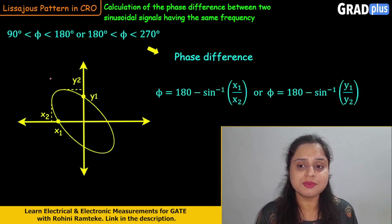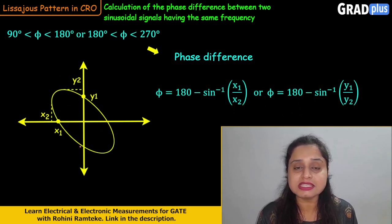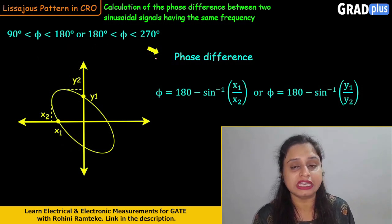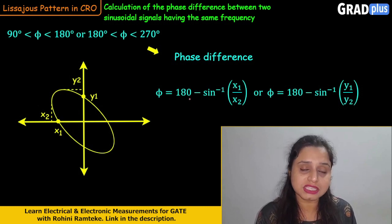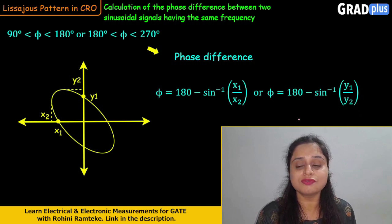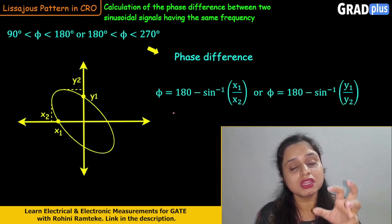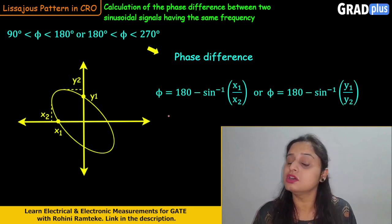If the Lissajous pattern developing on the screen is a differently oriented ellipse, the phase difference φ lies between 90 to 180 degrees or from 180 to 270 degrees. In that case, mark the same points x1, x2, y1, and y2 on the pattern. The formula for phase difference becomes: φ = 180° − sin⁻¹(x1/x2), or φ = 180° − sin⁻¹(y1/y2). Using these formulas, we can find out the phase difference of the two signals.